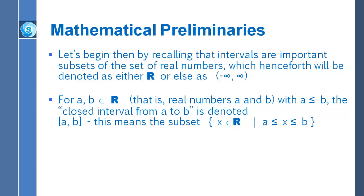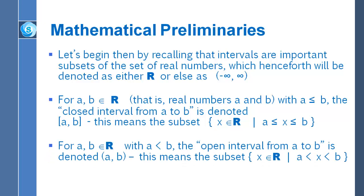So the closed interval is the set of real numbers X such that A is less than or equal to X is less than or equal to B — and that's called a closed interval. We similarly have the open interval idea. This time we don't include the endpoints. When we talk about the open interval from A to B, we're talking about the set of all real numbers between A and B, not including A and not including B. The standard notation for that is left parenthesis, A, comma, B, right parenthesis.